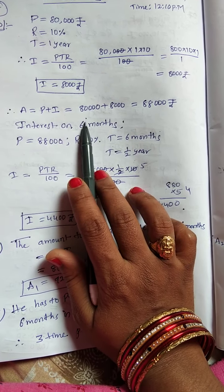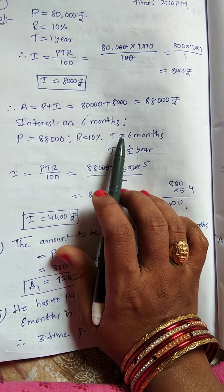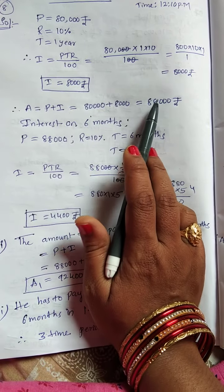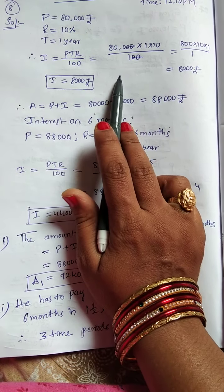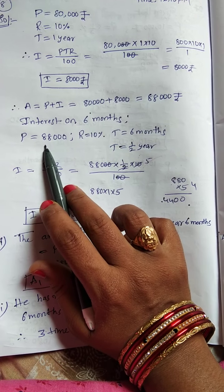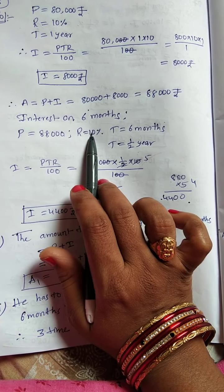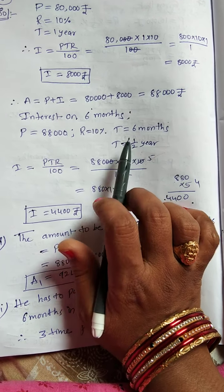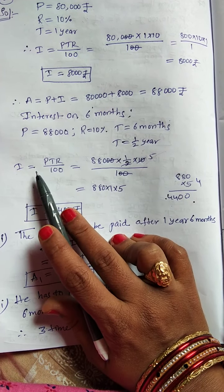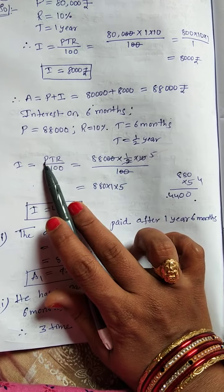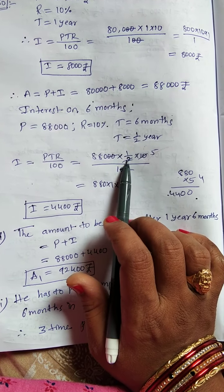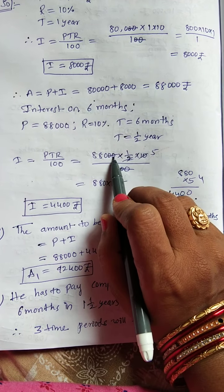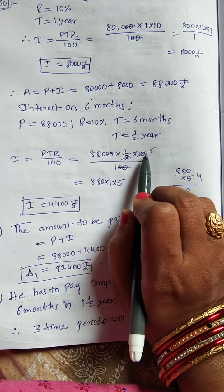Next, for the remaining half year (six months), we convert six months into a year, so T = 1/2. The new principal becomes 88,000 (the amount after one year). Rate of interest is still 10%. Using I = PTR / 100: I = 88,000 × (1/2) × 10 / 100.